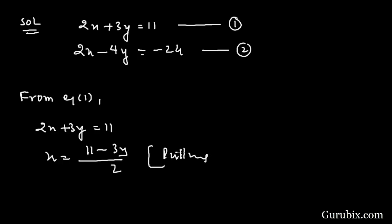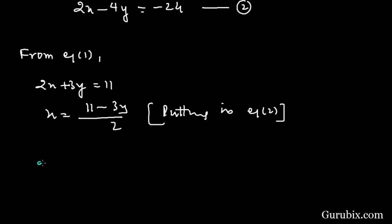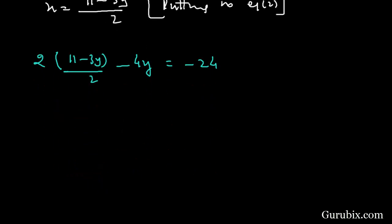Putting into equation number 2: 2 into (11 minus 3y over 2) minus 4y equals to minus 24. We cancel out the 2 in the numerator and denominator, giving us 11 minus 3y minus 4y equals to minus 24.